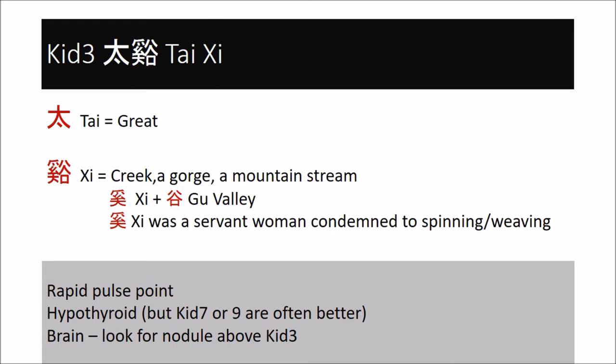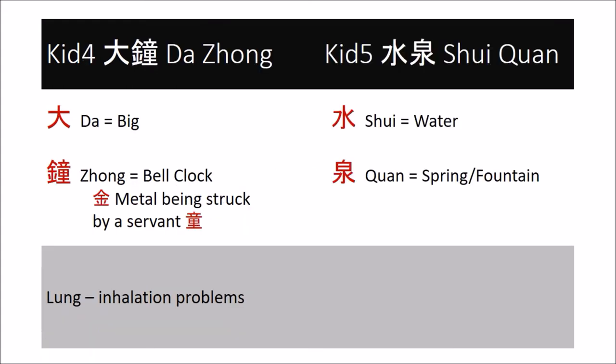Just above kidney three, there may be a nodule in people with brain injuries or brain problems, and I use it needled upwards towards kidney seven in patients with brain problems. In practice, I do not distinguish between kidney four and five, and I use a point adjacent to the calcaneum bone, needling down towards the bone, for asthma and other breathing issues. This is a point to use when the patient complains of difficulty breathing in, while spleen four is used when the patient is complaining about problems on exhalation. If the problem is in both inhalation and exhalation, kidney four is usually the point to start with.